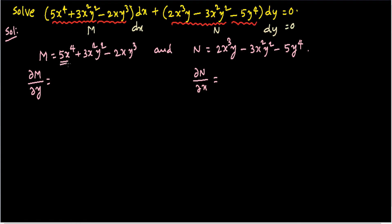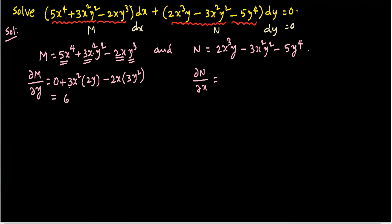When taking the partial derivative of M with respect to y, x is treated as constant. The first term gives 0, then 3x² is constant so derivative of y² with respect to y is 2y, and 2x is constant so derivative of y³ is 3y². This gives ∂M/∂y = 6x²y - 6xy².